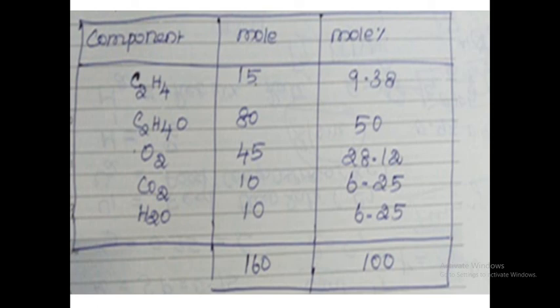Calculate mole percentage using: individual moles / total moles × 100. Ethylene: 15/160 × 100 = 9.38%. Ethylene oxide: 80/160 × 100 = 50%. Oxygen: 45/160 × 100 = 28.12%. Carbon dioxide: 10/160 × 100 = 6.25%. Water: 10/160 × 100 = 6.25%. The total percentages sum to 100%, confirming the solution is correct.